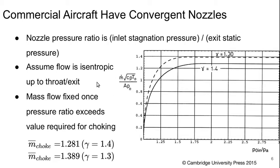Under these conditions, the mass flow is fixed once the pressure ratio exceeds that required for choking. The non-dimensional mass flow depends on gamma. When we have lower gamma, we get choking earlier at a lower pressure ratio, but the non-dimensional mass flow is higher because of the higher CP. The non-dimensional value with gamma 1.4 is 1.281, whereas with gamma 1.3 it's 1.389.